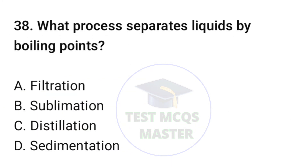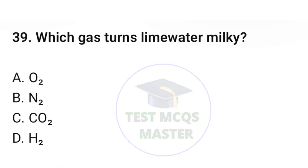Question number thirty-eight: what process separates liquids by boiling points? The correct option is C, distillation. Question number thirty-nine: which gas turns limewater milky? The correct option is C, CO2.